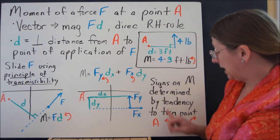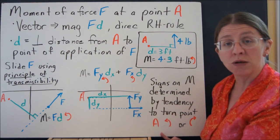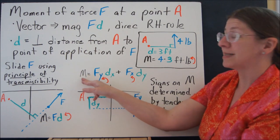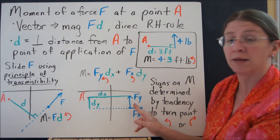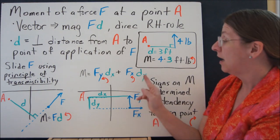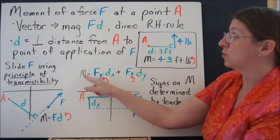So the tendency to turn point A, clockwise or counterclockwise, is what determines the direction of moment, not the signs of the forces, whether this is in the positive or negative x direction. It's these little arrows that tell you which way M is going.